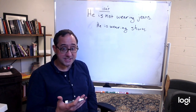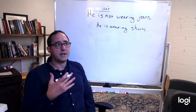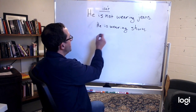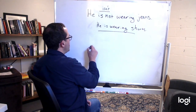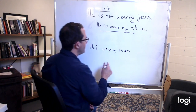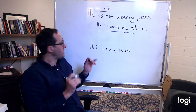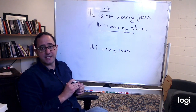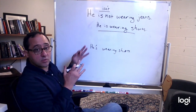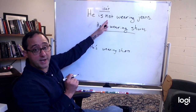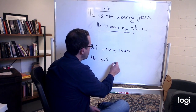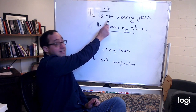How can we use contractions in order to shorten the way we talk? For the regular sentence, we would say 'he's' — he's wearing shorts. This is called a contraction. Instead of saying 'he is,' we say 'he's.' In the same way, for a negative, usually we would say 'he isn't' — he isn't wearing shorts. I'm contracting the 'is' and the 'not.'